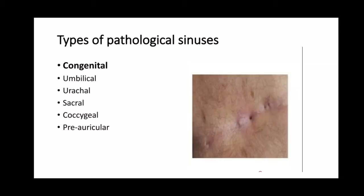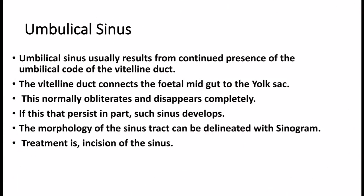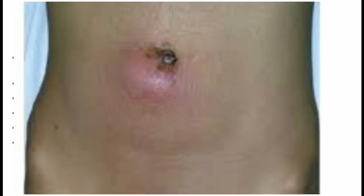A picture showing what a sinus looks like is presented. Umbilical sinus usually results from the continued presence of the vitelline duct. In intrauterine life, the vitelline duct connects the fetal midgut to the yolk sac; this normally obliterates and disappears completely. If it persists in part, such a sinus develops. The morphology of the sinus tract can be delineated with a sinogram. Treatment is incision of the sinus.